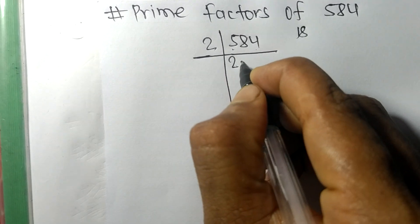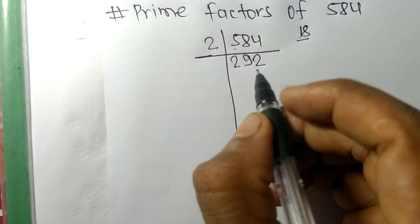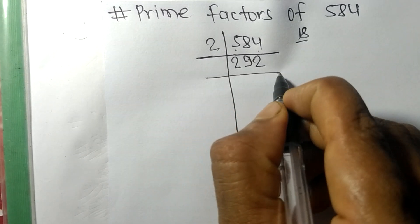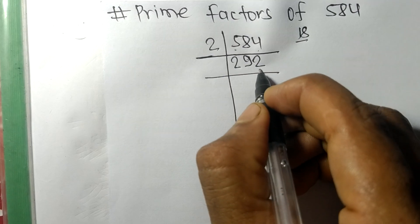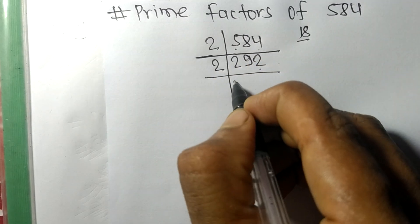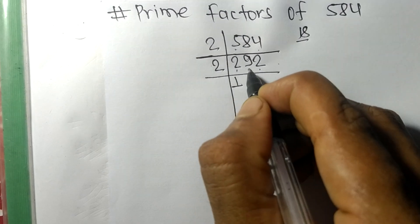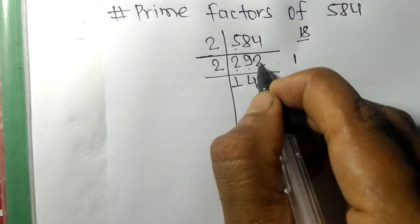Again we have an even number 2 at last, so it is divisible by 2. 2 times 1 is 2, 2 times 4 is 8, remainder 1 and these two 12. 2 times 6 is 12.